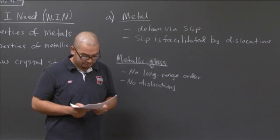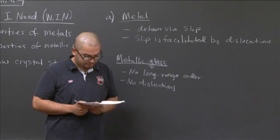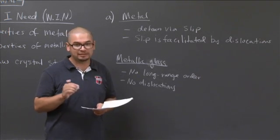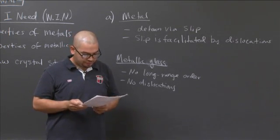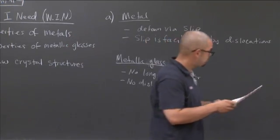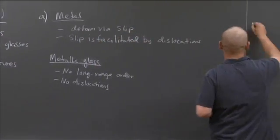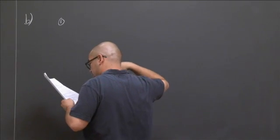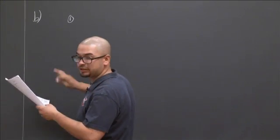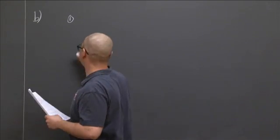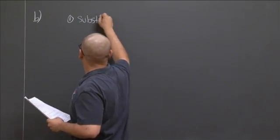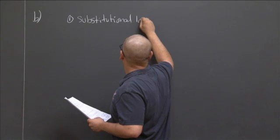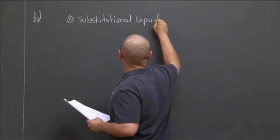Part B asks: On each of the following separate drawings of one face of an FCC unit cell, FCC stands for face-centered cubic, indicate one of each of the following. So now we're going to move on to part B. Part B wants, there's three scenarios. One, it wants us to indicate on a face of a crystal, a substitutional impurity.